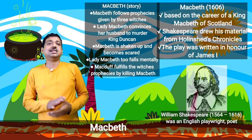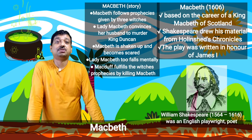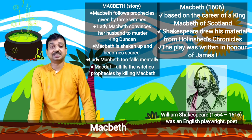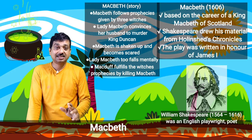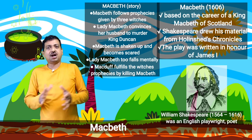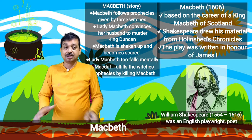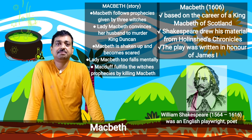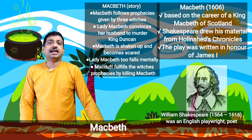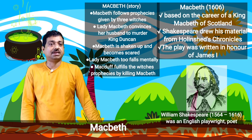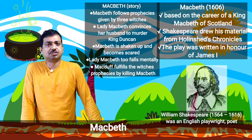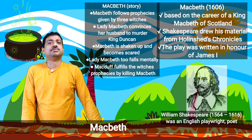The play was written in honor of James I. It is one of the most popular and powerful of Shakespeare's tragedies — closely knit in structure and direct and concentrated in impact. Historically, Macbeth was a commander under King Duncan who murdered Duncan in 1040 and claimed the kingdom for himself. After a rule of about 20 years, Macbeth was killed by Duncan's son Malcolm, who later became King Malcolm III.